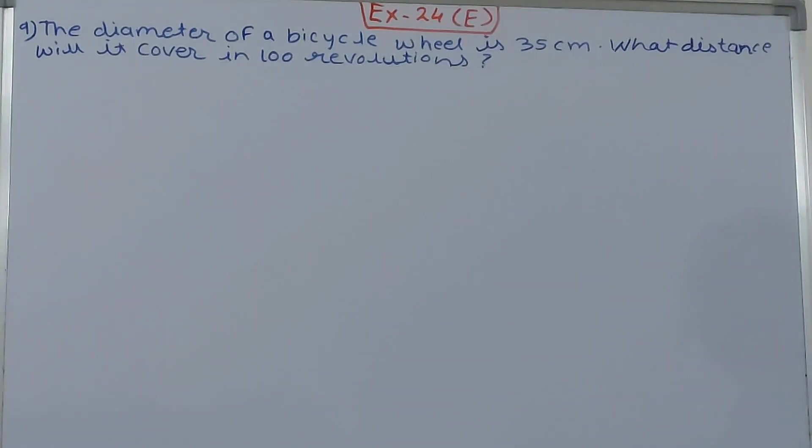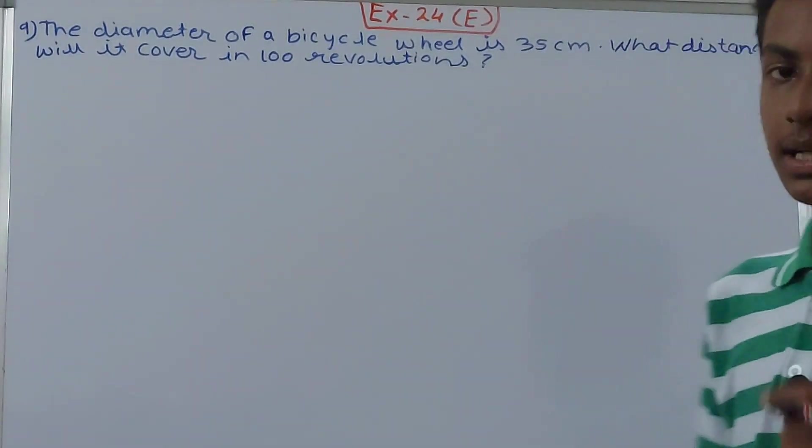a bicycle wheel is 35 centimeters. What distance will it cover in 100 revolutions? Now see here, it says